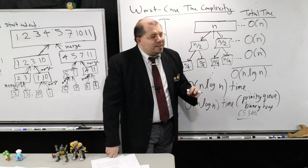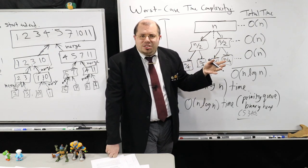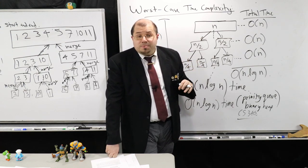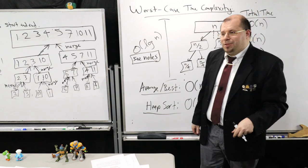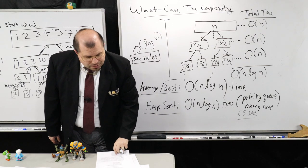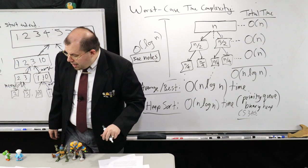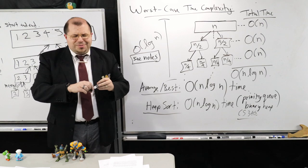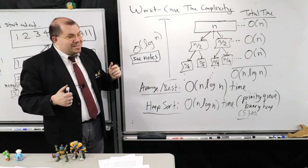One other point: in Merge Sort, notice that in my merge phase I always have to create a couple of arrays to dump the elements into — the ones I use my fingers to move across. Those take up additional space. That's often considered a drawback of Merge Sort as opposed to Quicksort, which does no such thing — the only additional memory in Quicksort is the call stack. So that's all I have to say about sorting. Thank you very much and have yourself a beautiful day.